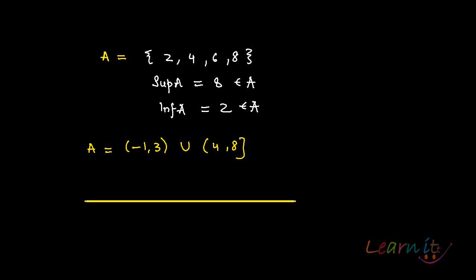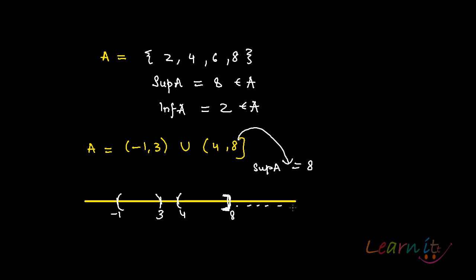On the real line it looks like this: we have -1, then 3, then 4, then 8, with the first part open and the second part closed. The supremum of A is the least upper bound, which is 8. Anything above that is also an upper bound, and here 8 belongs to A.